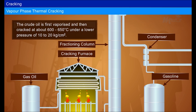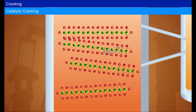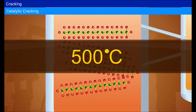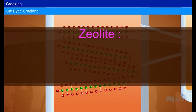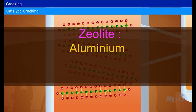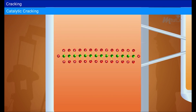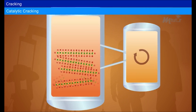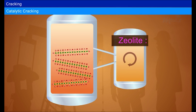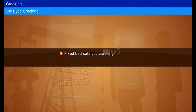Catalytic cracking: the long carbon bonds are broken at temperatures of about 500 degrees Celsius in an oxygen-free environment in the presence of zeolite, a crystalline substance made up of aluminum, silicon, and oxygen, which acts as a catalyst during the process. The catalyst, usually in the form of a powder, is treated and reused over and over again. There are two types of catalytic cracking: fixed bed catalytic cracking and moving bed or fluid bed catalytic cracking.